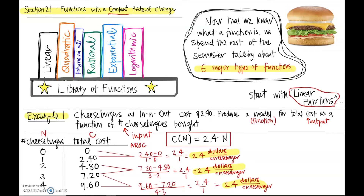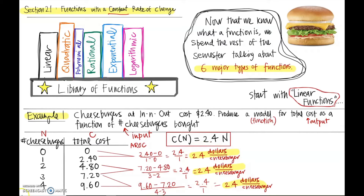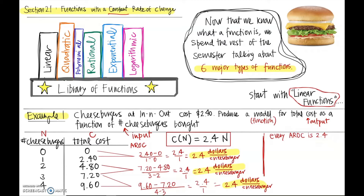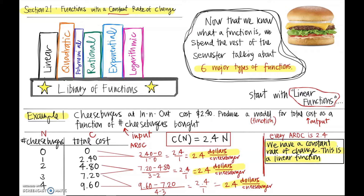This is the idea behind a constant rate of change: you have a function where anywhere you take an average rate of change, you're getting the same exact rate of change, the same exact number. When you graph these, with a constant rate of change, they all look like straight lines. So every average rate of change in this function is 2.4 — wherever we look, that's what we're going to find. We have what's called a constant rate of change; the average rate of change stays the same.